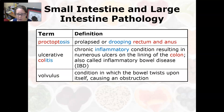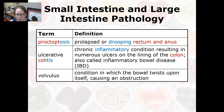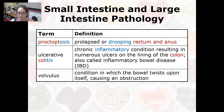Proctoptosis is a prolapse or drooping of the rectum and anus — it's no longer held in place and falls down. Ulcerative colitis is a chronic inflammatory condition that results in numerous ulcers on the lining of the colon, also called inflammatory bowel disease or IBD. A volvulus is a condition in which the bowel twists upon itself causing an obstruction, which can cause serious problems requiring surgery.